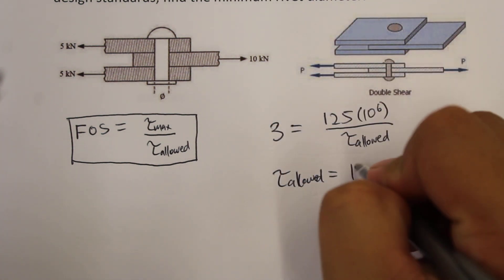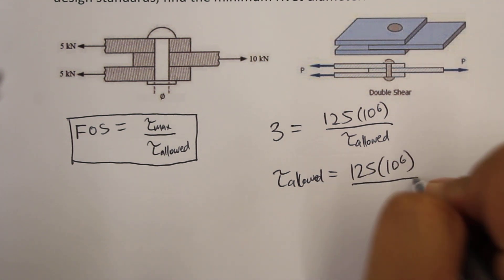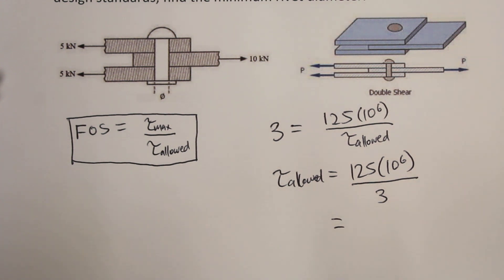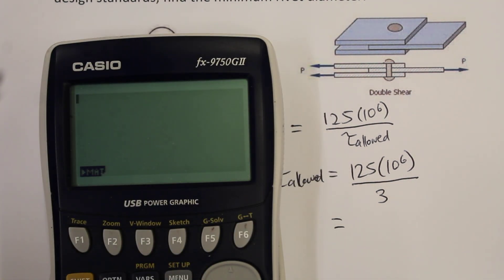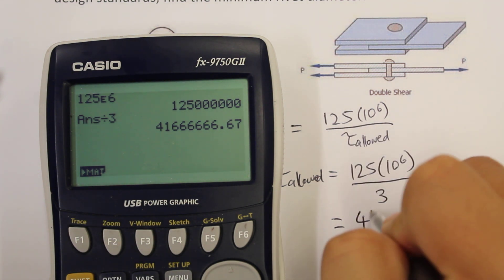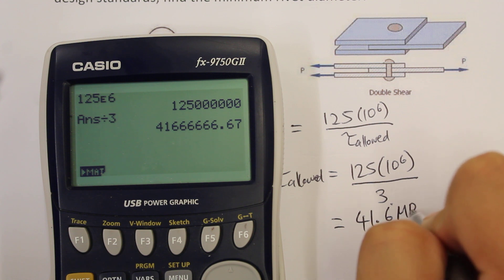So that would be 125 times ten to the six mega pascals, divided by three. That gives us 41.6 recurring mega pascals.